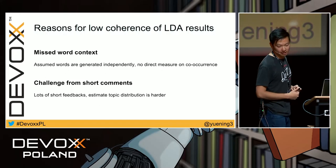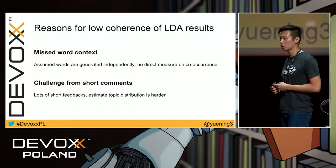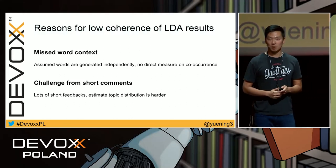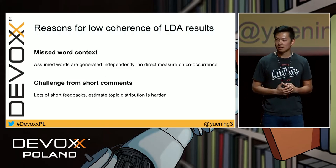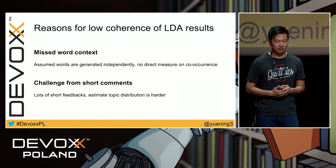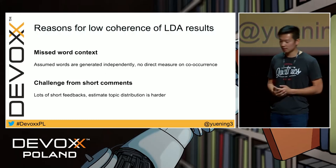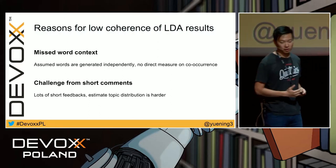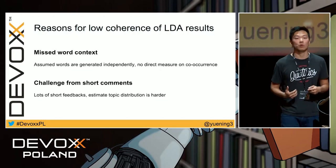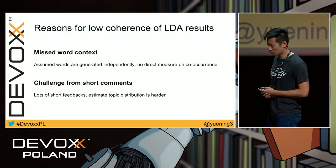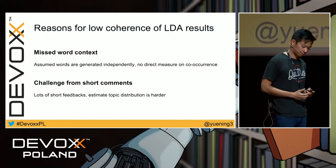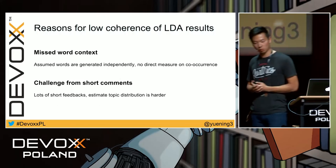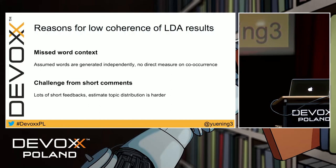For short feedback texts, it's harder to estimate topic distributions, especially when you have a lot of them. So unfortunately, for this most popular approach to topic modeling, we have these fundamental problems, and without a major refactor we won't be able to use it. What are the alternative approaches?